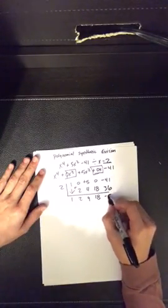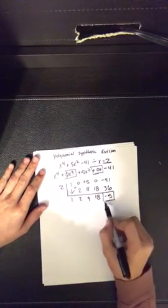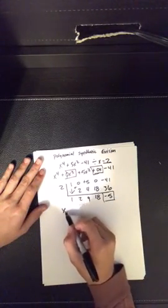18 times 2 is 36. We have positive 36, negative 41, which gives us a negative 5 as our remainder.